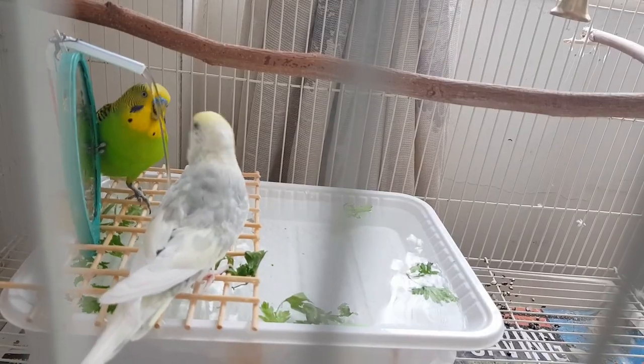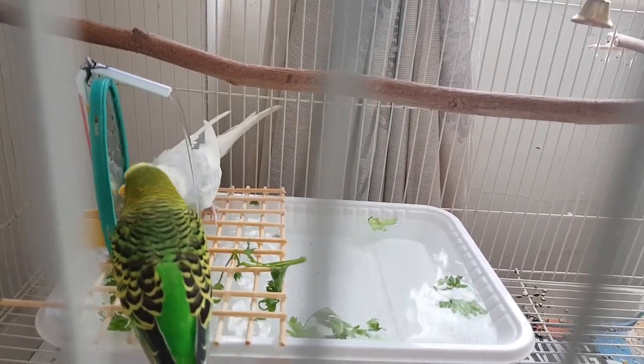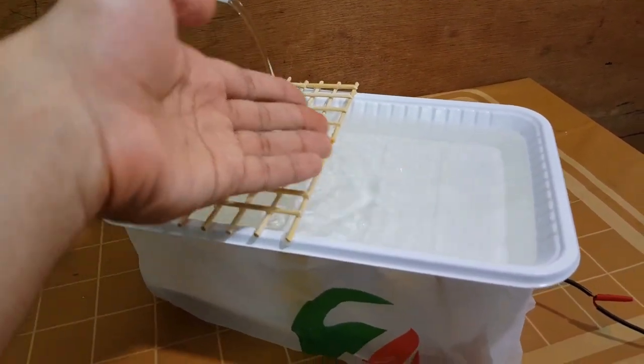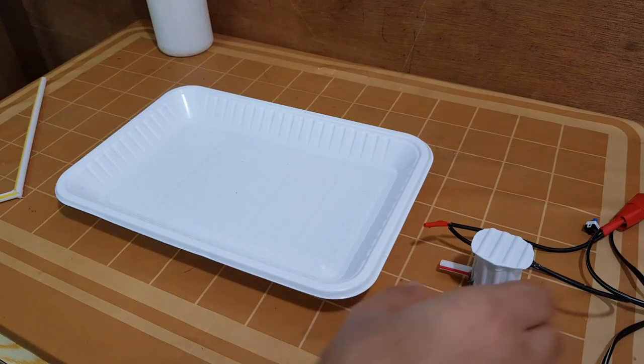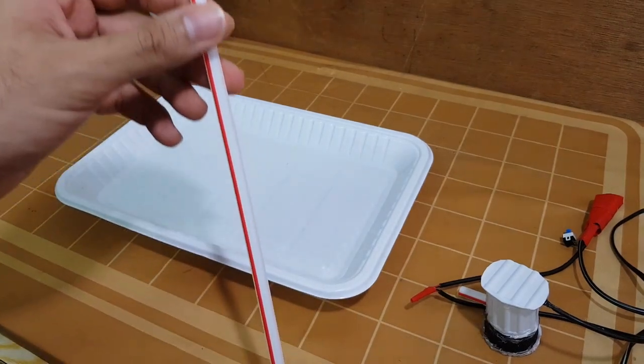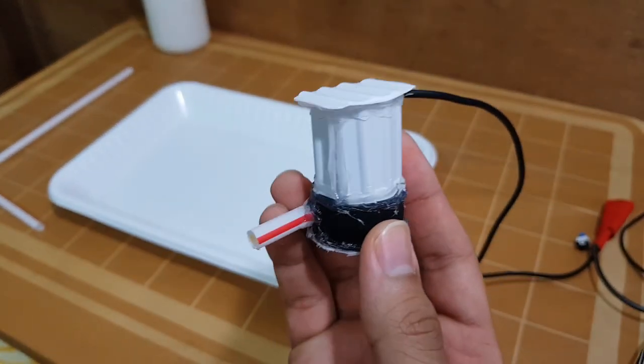Hey guys, today I'm going to show you how to make a small fountain using a 3-volt water pump that we built in the previous video. Before we start, I have to make sure that this water pump can pump the water to at least this height. This motor works with 3 volts, so don't expect more from it.